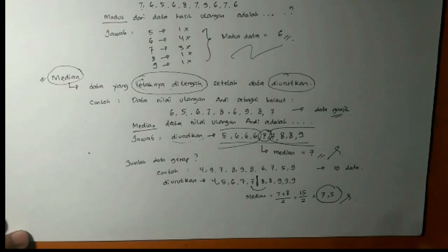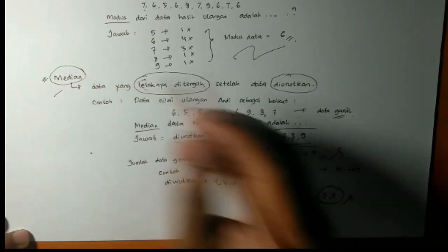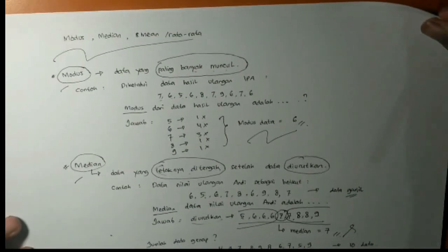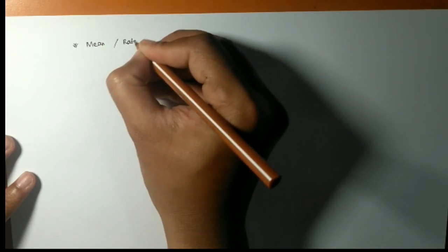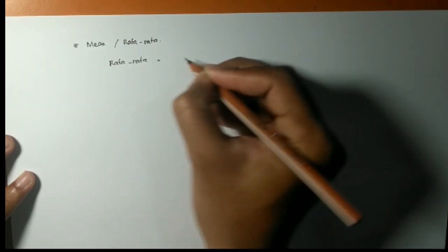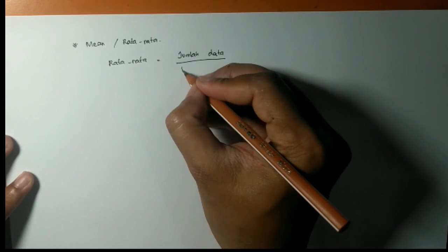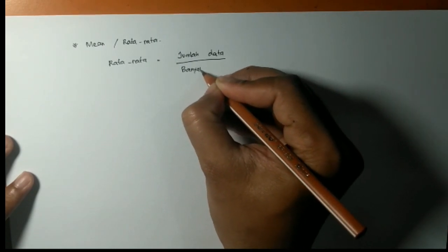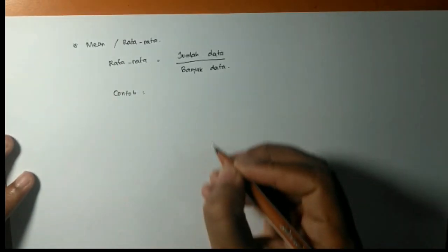Cukup mudah ya. Baik, kita sudah mempelajari modus dan median. Berikutnya kita pelajari rata-rata ya atau mean. Mean. Rata-rata itu rumusnya adalah jumlah data dibagi banyaknya data. Diingat-ingat ya. Ini rumus rata-rata.